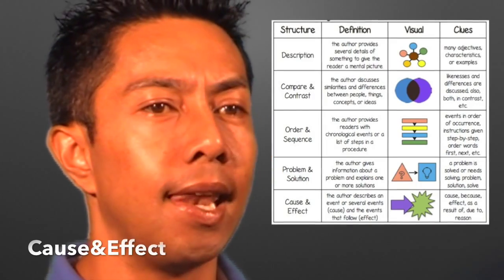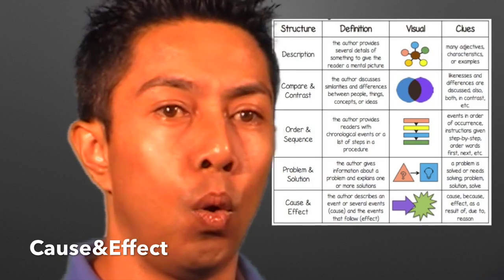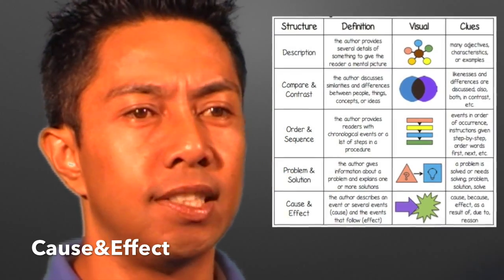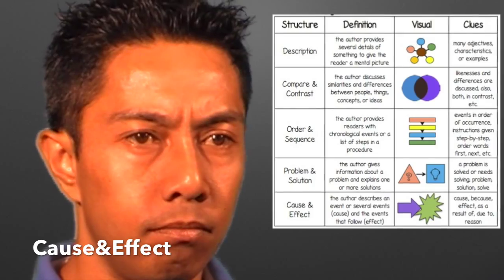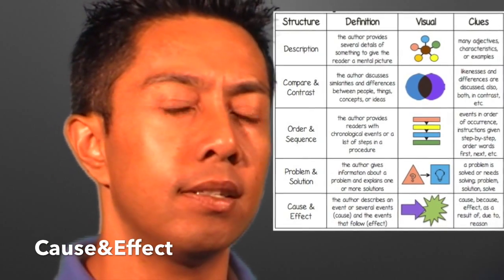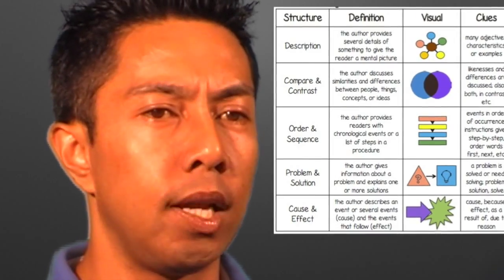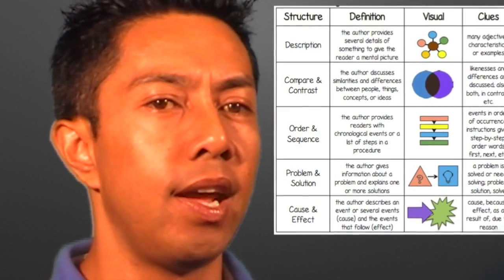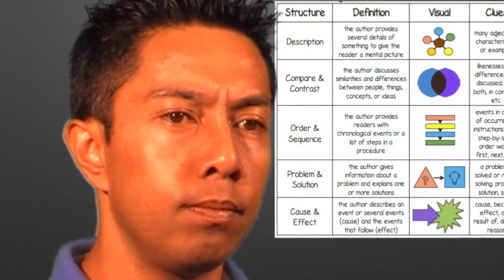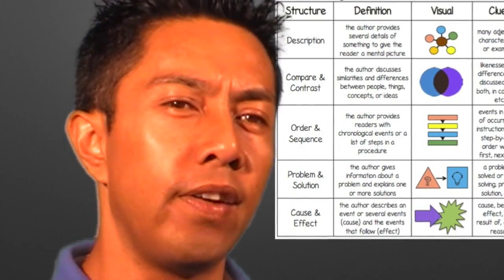Cause and effect is the last structure. This is where an event — the cause — has an impact — the effect. For example, heat from the sun (the cause) made my ice cream melt (the effect). The most common way to summarise this is with an arrow between your cause and effect. Just be aware that for more complex phenomena like World War II, there could be multiple causes and multiple effects.